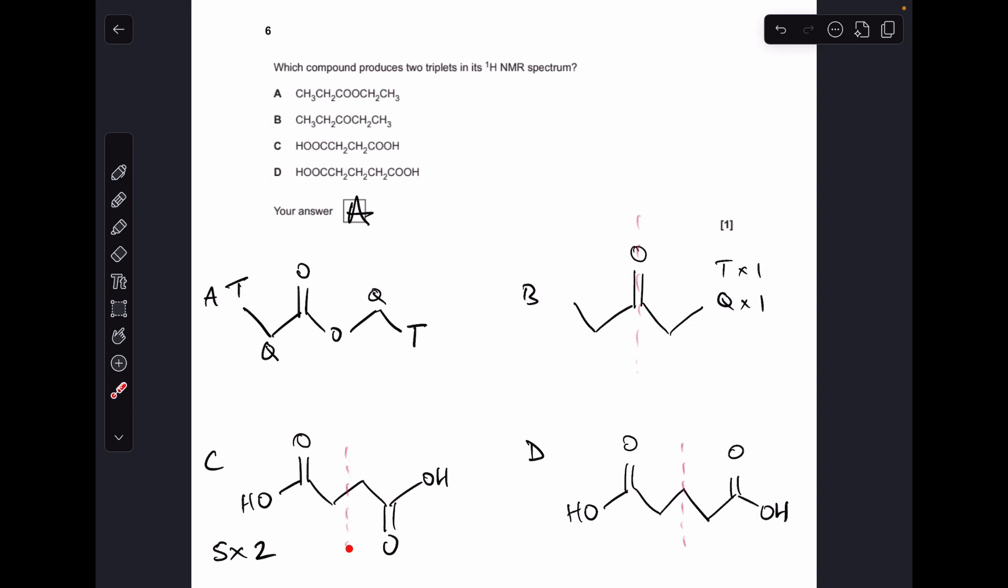Option C, we've got the line of symmetry down there, so these protons are equivalent, so we're going to see one singlet for them. And then these CH2s here will just come out as a singlet because you don't get splitting by an adjacent equivalent set of protons. Okay, so these are equivalent to each other, so you don't see a triplet, even though it's a CH2 adjacent, it's just another singlet.